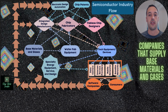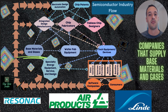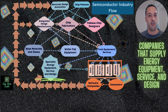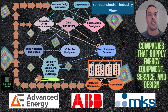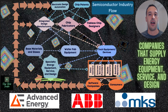Coming at it from the other angle, also flowing into the IDMs, chip fabs, and fabless chip designers, you have base materials and gases. That could be a company like Resonec in Japan that helps supply base materials, or Air Products or Linde that provide gases used in the manufacturing of chips. Closely related, I have a separate segment for specialty energy equipment, service, and design — companies like Advanced Energy, ticker AEIS, ABB, and MKS Instruments. These are companies that provide the basic raw materials and equipment needed for IDMs and chip fabs.